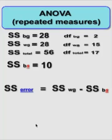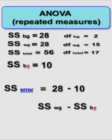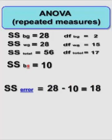So now here's the sum of squares for the error. That equals the sum of squares within-group minus the sum of squares between-subjects, that's the one we just calculated right there. So we're going to plug in the real values and we get a grand total of 18 from the sum of squares for the error.